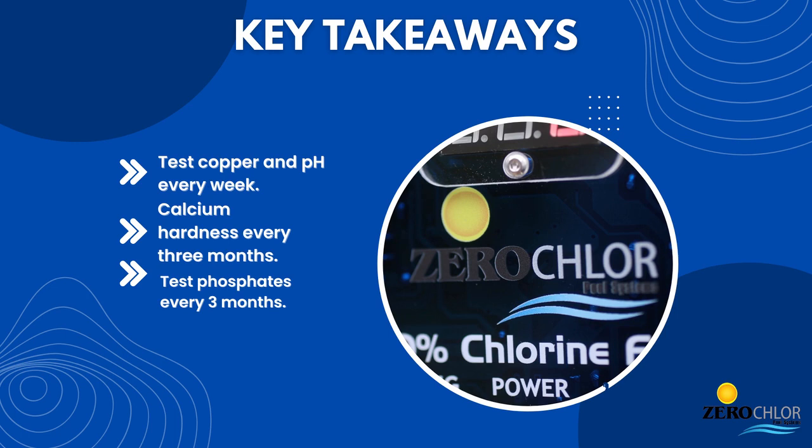Test copper and pH every week. Calcium hardness every month or when the blue number falls below 1.5. Test phosphates every three months. Test more if you have a persistent algae issue.